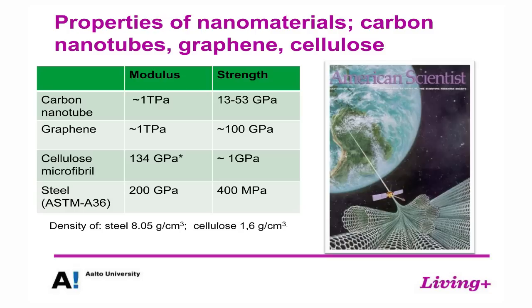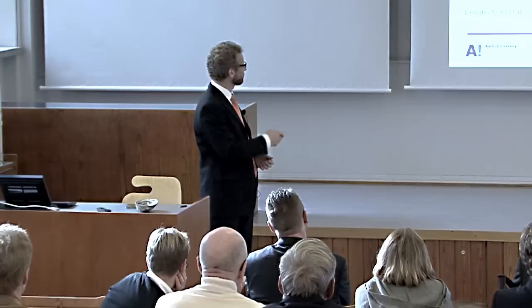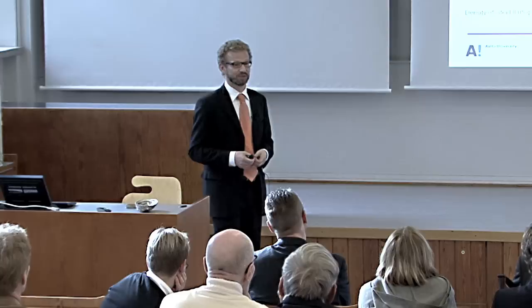Here's an example comparing a few different materials. At the bottom we have steel, a familiar engineering material - a sort of bulk material without very much structure. But there are other materials: cellulose, carbon nanotubes, and graphene, which are described as the strongest materials we know. The modulus is how stiff the material is at the start, and the strength is when it all breaks apart. These are very good materials.